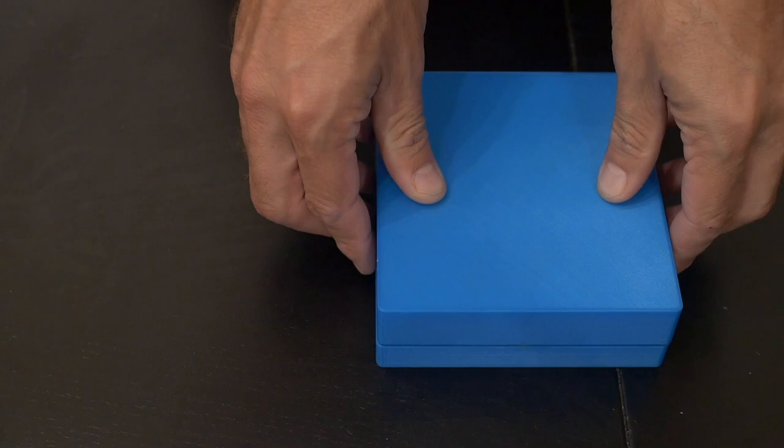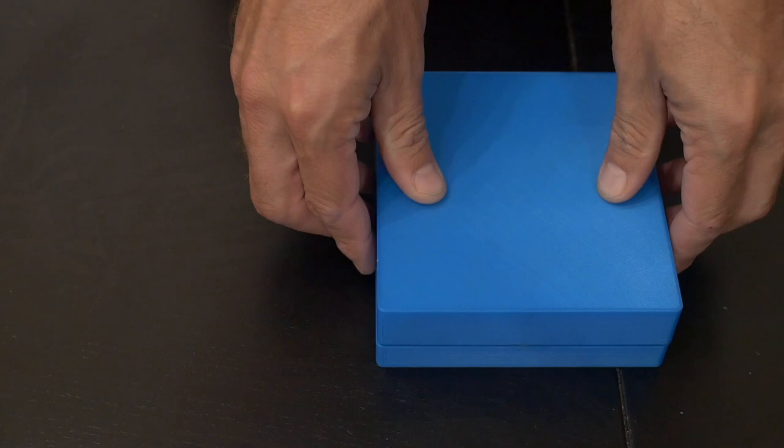The hundo case gauge, the flip tray stand, and Dillon precision 100 round ammo boxes are all available at the Ben Stager Pro Shop.com web store.